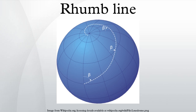Theoretically a loxodrome can extend beyond the right edge of the map, where it then continues at the left edge with the same slope. Rhumb lines which cut meridians at oblique angles are loxodromic curves which spiral towards the poles. On a Mercator projection the north and south poles occur at infinity and are therefore never shown. However, the full loxodrome on an infinitely high map would consist of infinitely many line segments between the two edges.